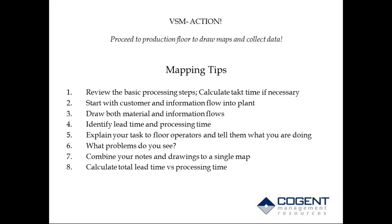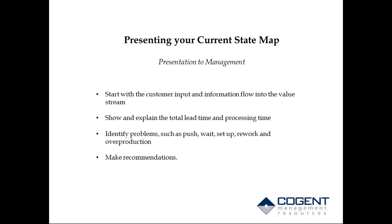When you finish your current state map, you'll need to present it to management who may not completely understand lean theory. This visual representation will make it fairly quick for them to catch on. You start off with: this is what the customer tells me, and this is what I tell myself to make this thing start. Then you show the lead time and process time at each step and identify the problems — a push operation here, wait time here, an extended setup issue, more rework than you know what to do with. From that, you'll have recommendations for management.